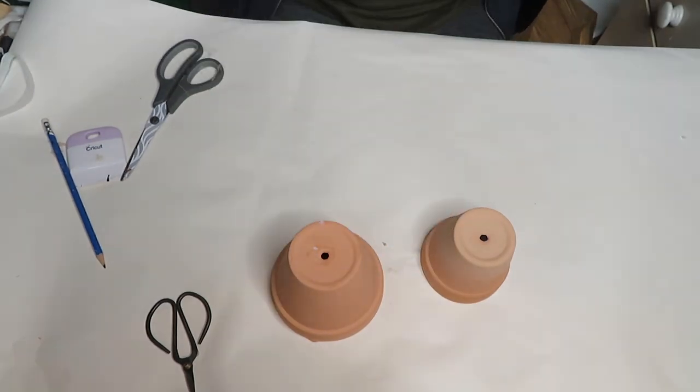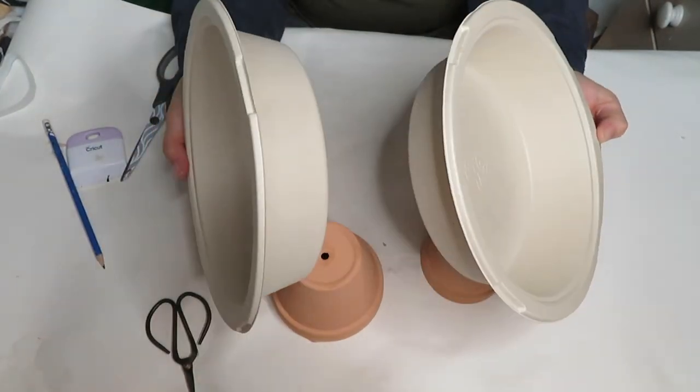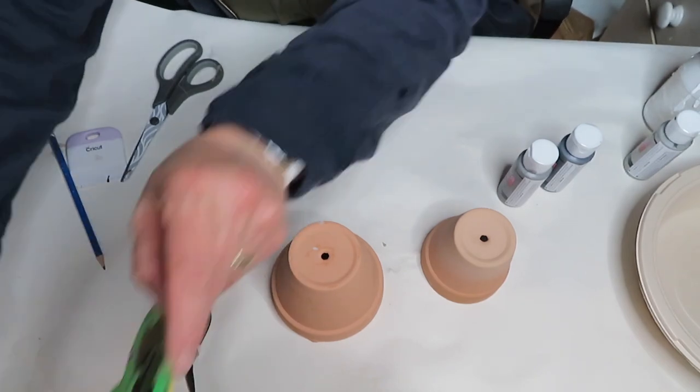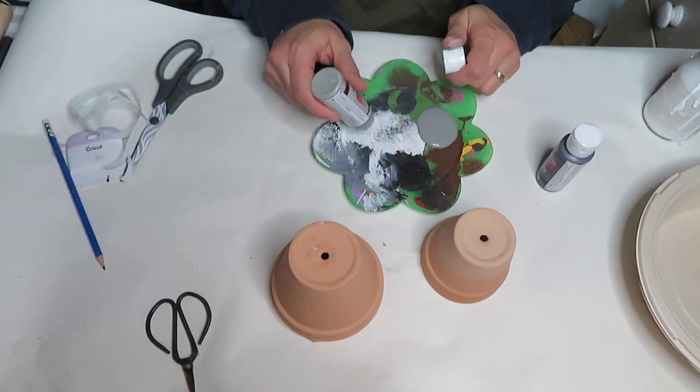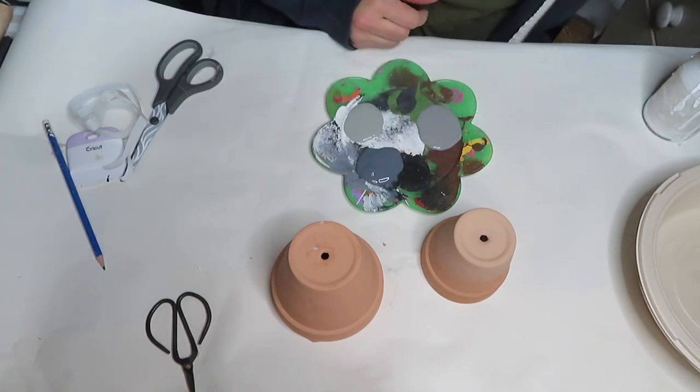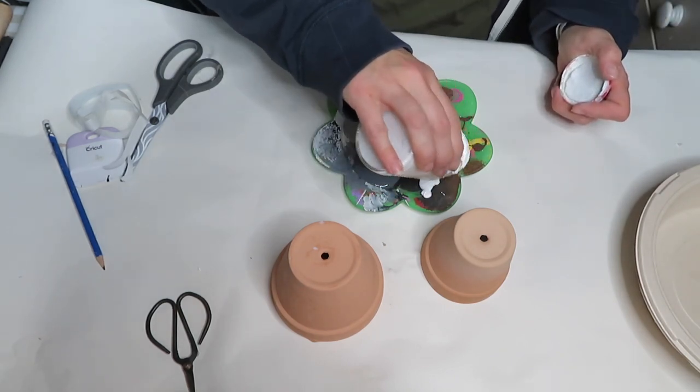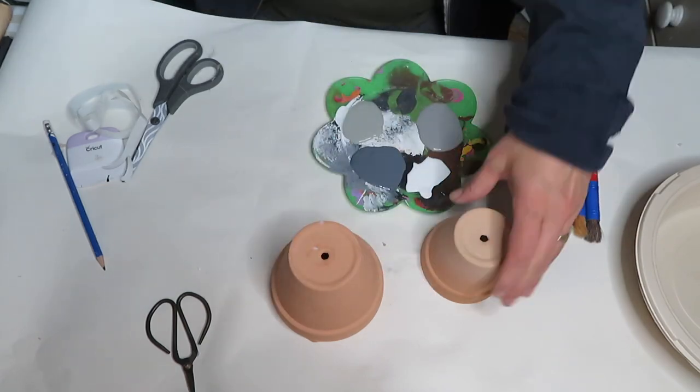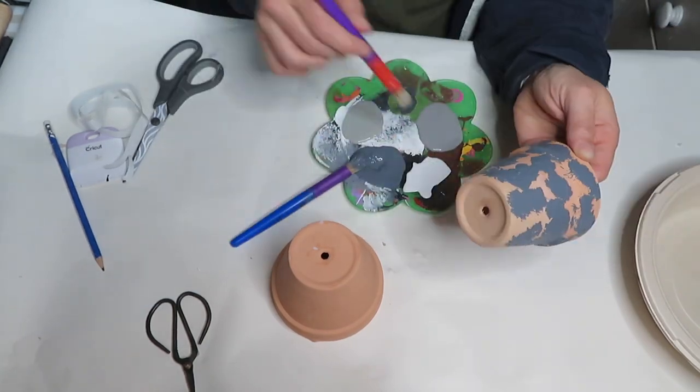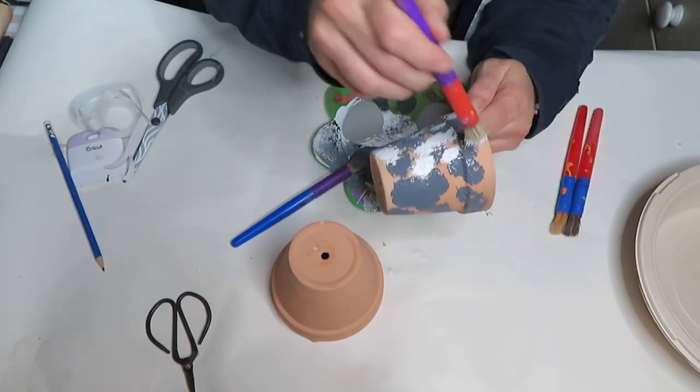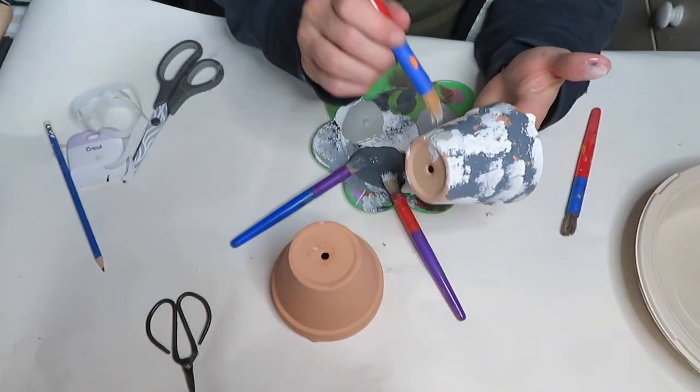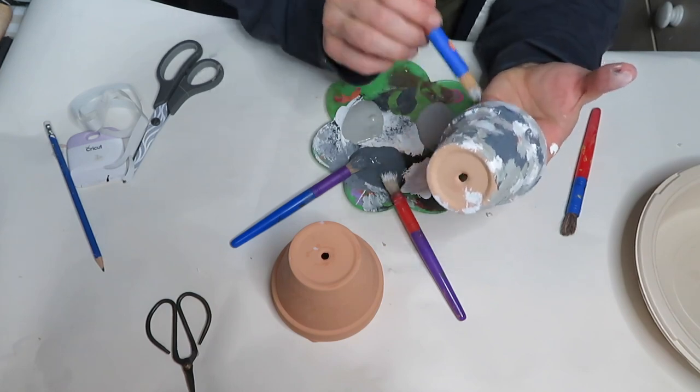For my next project I am using terracotta pots which were available in the garden section at Dollar Tree as well as these reusable one time use pie plates. And then I am using some different shades of gray acrylic paint as well as white. I am going to paint all the terracotta pots and the pie plates with these colors. I am going to layer the paint with regular bristle paint brushes first and then I'm going to blend them with a sponge brush. I am trying to create a galvanized look on these.